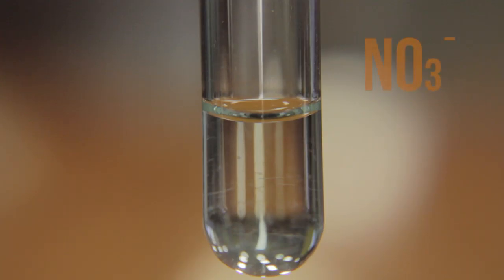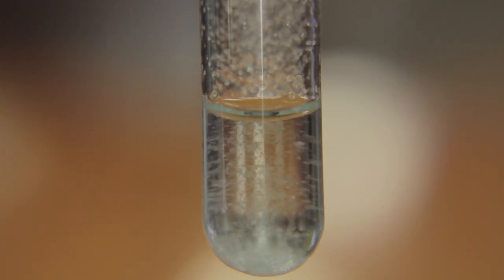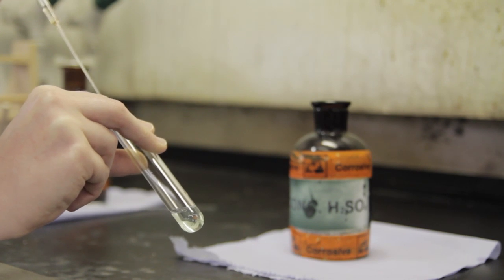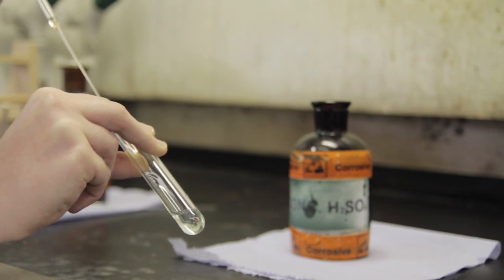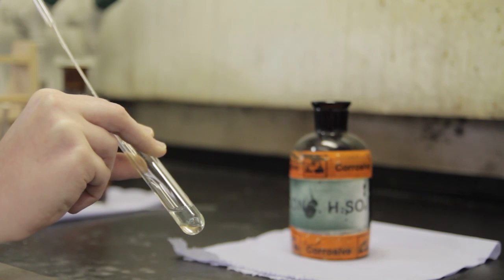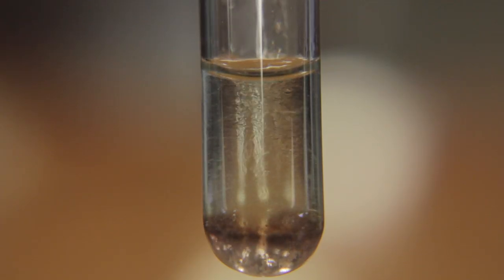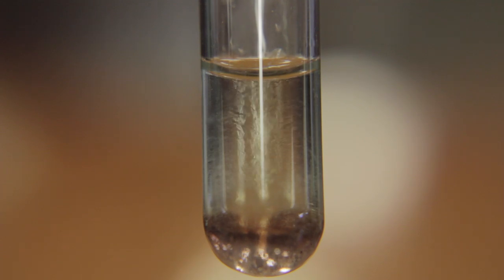The nitrate anion is acidified using dilute sulfuric acid. Solid ferrous sulfate is added and then, working in the fume hood, the test tube is held at an angle and 4-5 drops of concentrated sulfuric acid are allowed to run down the side of the test tube. The formation of a brown ring confirms the anion is nitrate.